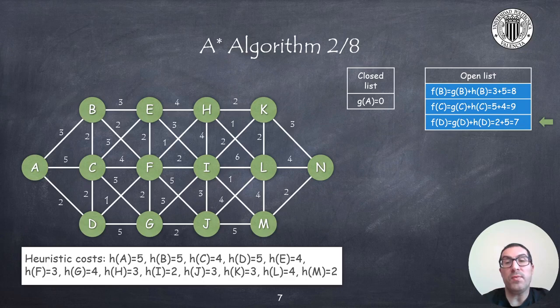Furthermore, if we add the heuristic cost to these costs, then node D has a cost of 7 units, which is the lowest one. Therefore, that will be the selected node.